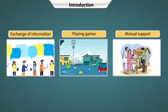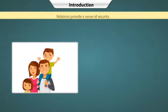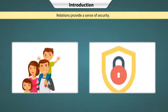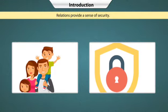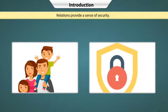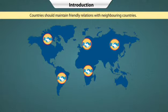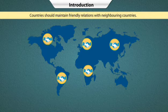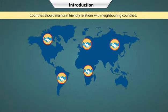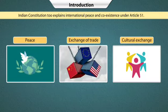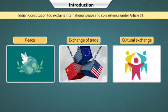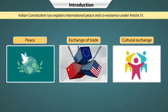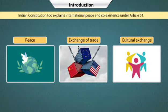India and USA both are active in strengthening the UNO and maintaining global peace. Similarly, in the global scenario, countries should maintain friendly relations with neighbouring countries. This helps them to maintain peaceful coexistence in the area, mutual exchange of trade, cultural exchange and mutual support in case of emergency situations.